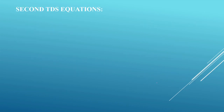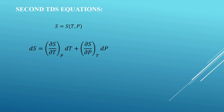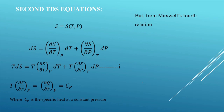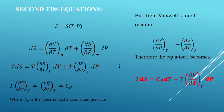For the second TdS equation, we take entropy S as a function of temperature T and pressure p. Differentiating and multiplying by T gives T·(∂S/∂T) at p = (∂Q/∂T) at p = Cp, where Cp is the specific heat at constant pressure. Using Maxwell's fourth relation, (∂S/∂p) at T = −(∂V/∂T) at p. Substituting, equation 1 becomes T dS = Cp dT − T·(∂V/∂T) at p · dp. This is the second TdS equation.